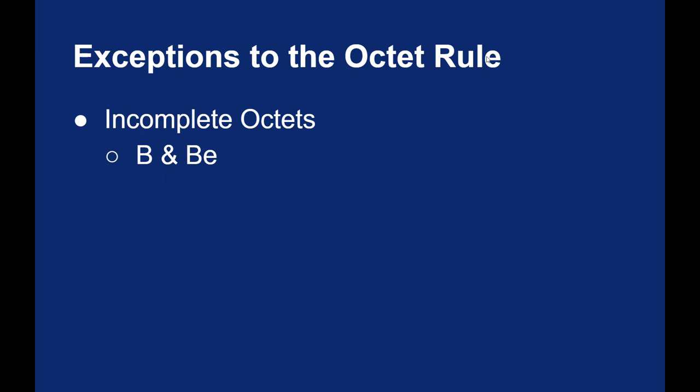Beryllium can also be satisfied with an incomplete octet. Beryllium only needs four electrons around it when it forms covalent bonds. Now this is a strange case because beryllium is a metal and we generally think of metals forming ionic bonds.